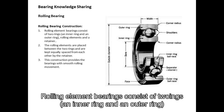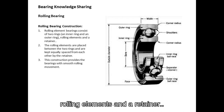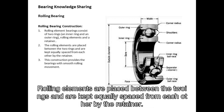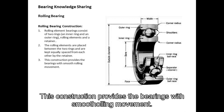Rolling element bearings consist of two rings: an inner ring and an outer ring, rolling elements, and a retainer. Rolling elements are placed between the two rings and are kept equally spaced from each other by the retainer. This construction provides the bearings with smooth rolling movement.